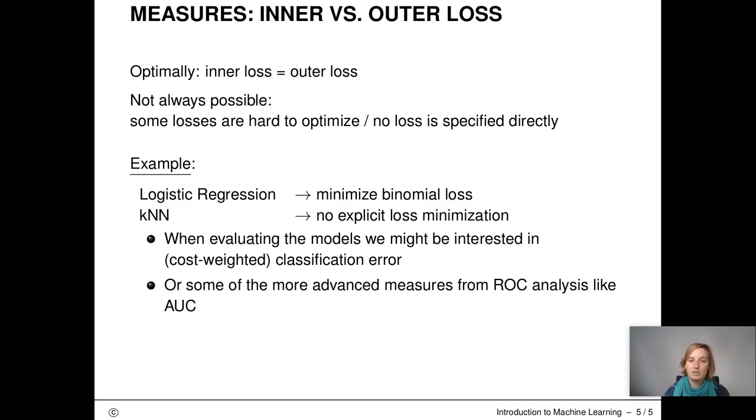Let's look at two examples, logistic regression and k-nearest neighbors. Logistic regression is often used because it is easy to compute and easy to interpret. With KNN, we have an algorithm without explicit loss minimization. So we don't really know the loss here. Now, when we want to compare models computed by logistic regression and KNN, we need to think about what is actually the evaluation measure.